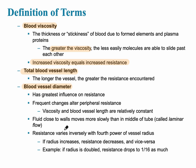Resistance varies inversely with the fourth power of the vessel radius. The key takeaway is that when the radius or diameter of a blood vessel increases, resistance decreases — the larger the vessel, the less resistance. Conversely, decreasing the diameter increases resistance, making it more difficult for blood to be pumped through a smaller vessel.